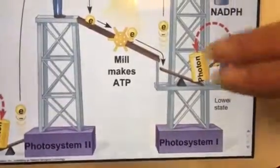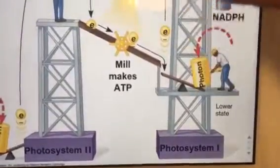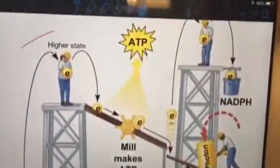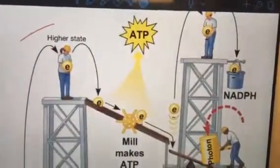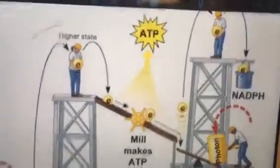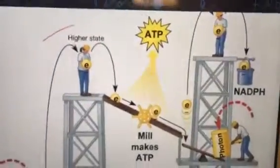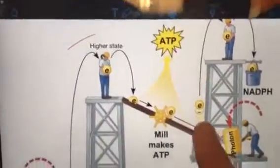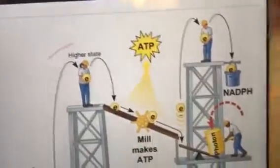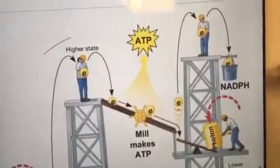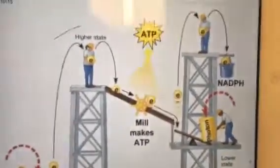That photon energy lifts it back up even more, to Photosystem I, which is P700. Once it goes through Photosystem I, it is then stored in NADPH.